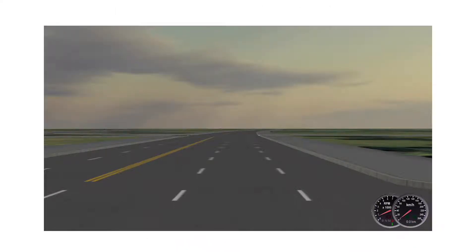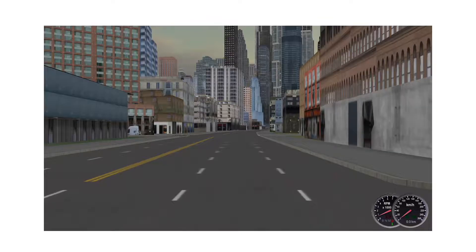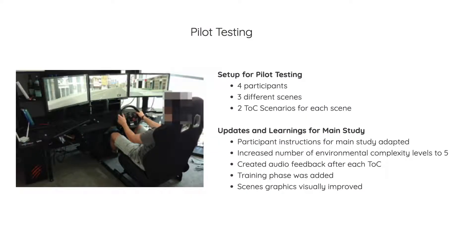If we quickly go through all levels, you can easily see how complexity adds up. Before the main study, we performed pilot testing with 4 participants, 3 different scenes, and 2 takeover of control scenarios for each scene. Updates for the main study included revised participant instructions, an increase to 5 levels of environmental complexity, audio feedback after each takeover, a training phase, and visually improved scene graphics.